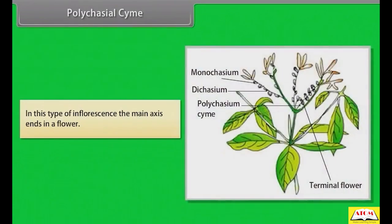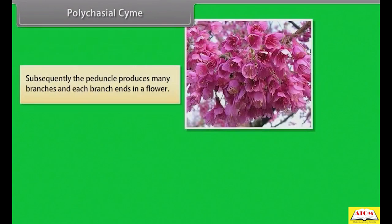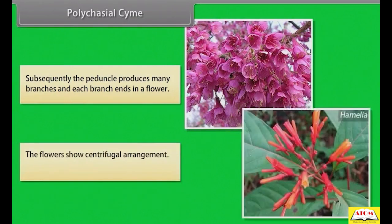In polychasial cyme, the main axis ends in a flower. Subsequently the peduncle produces many branches and each branch ends in a flower. The flowers show centrifugal arrangement. Example: Hamelia.